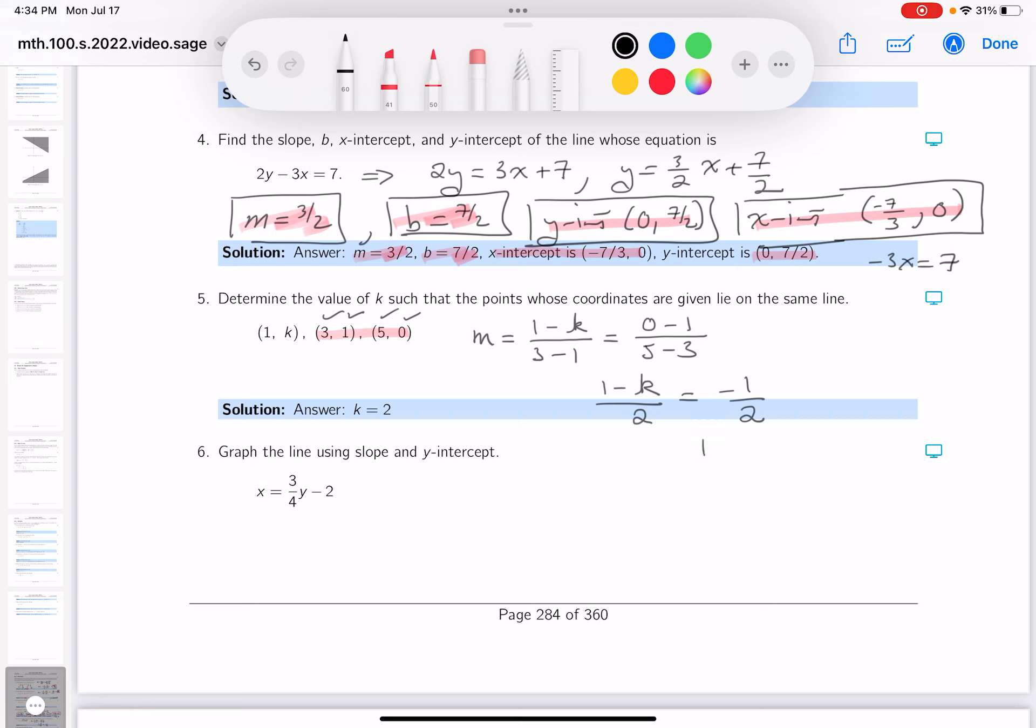All right? Multiply both sides by two. What do you get? One minus k equals minus one. What would I do here? I'd probably subtract one from both sides and you would get minus k equals minus two. What's k? k is equal to two.